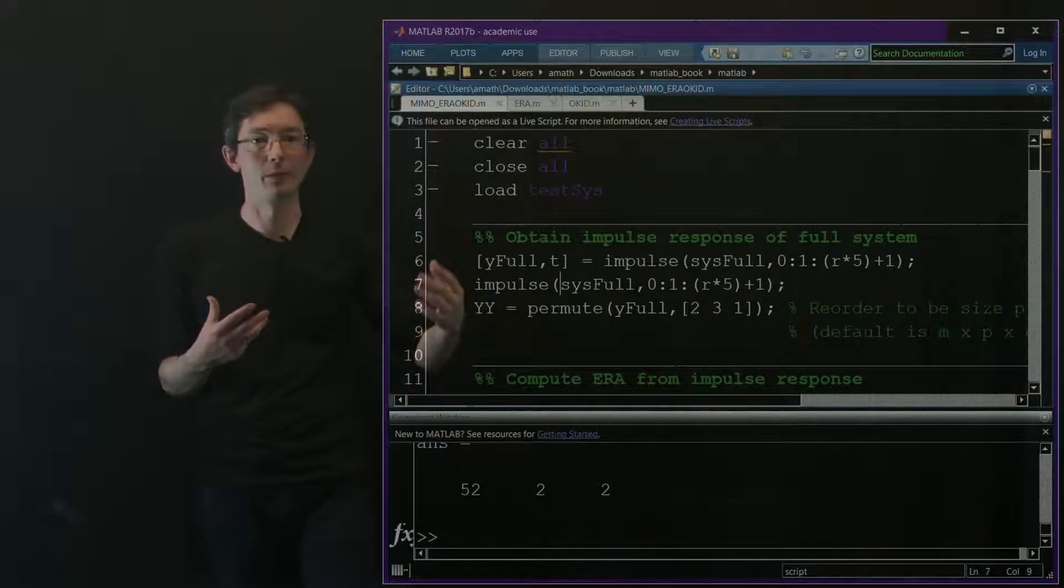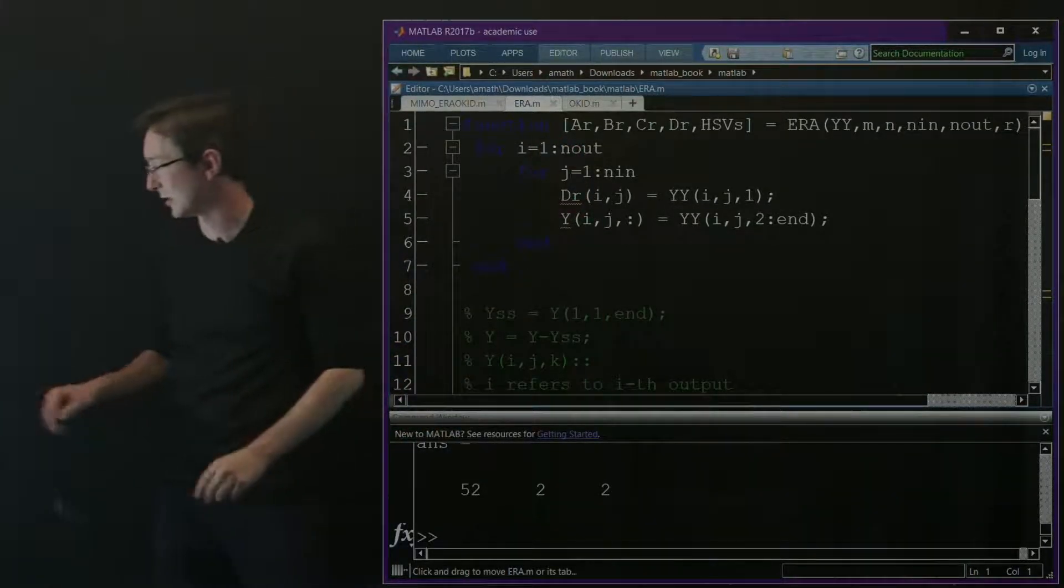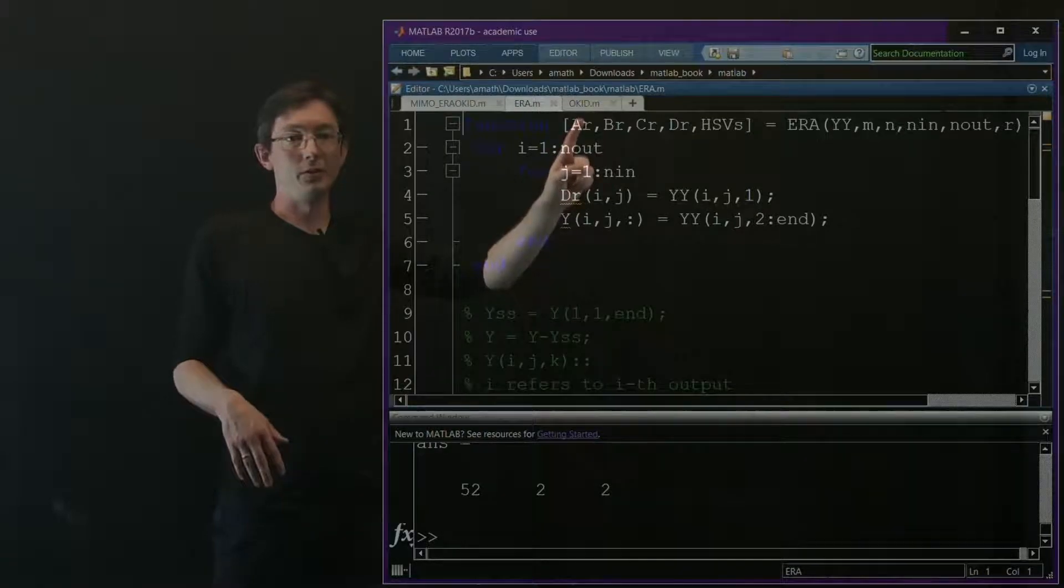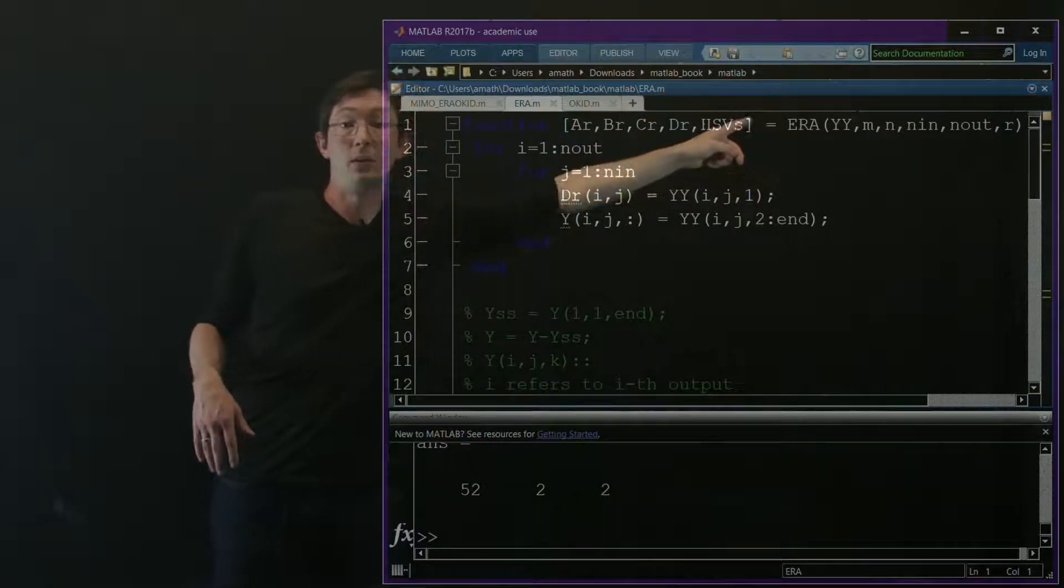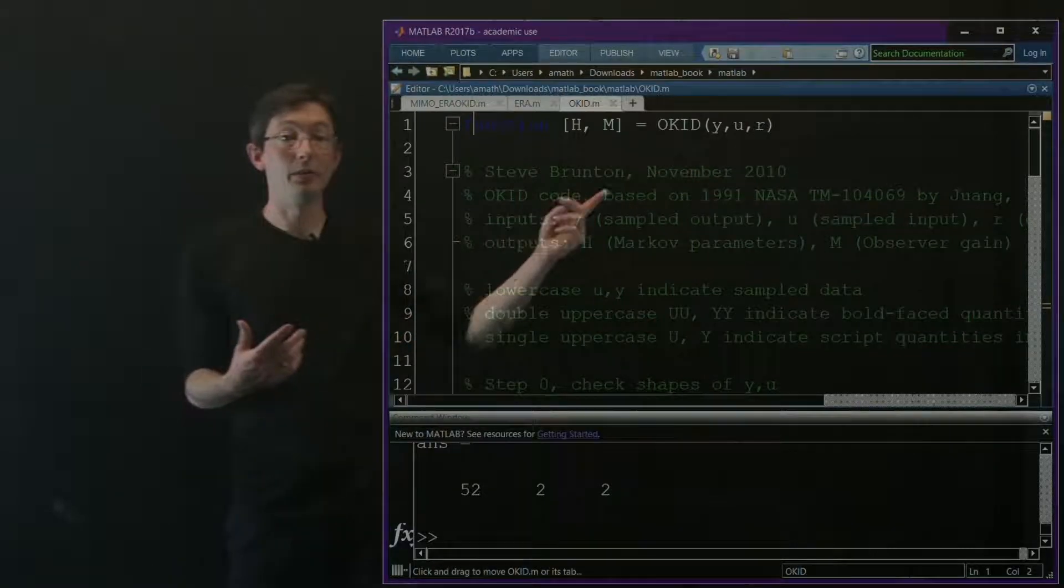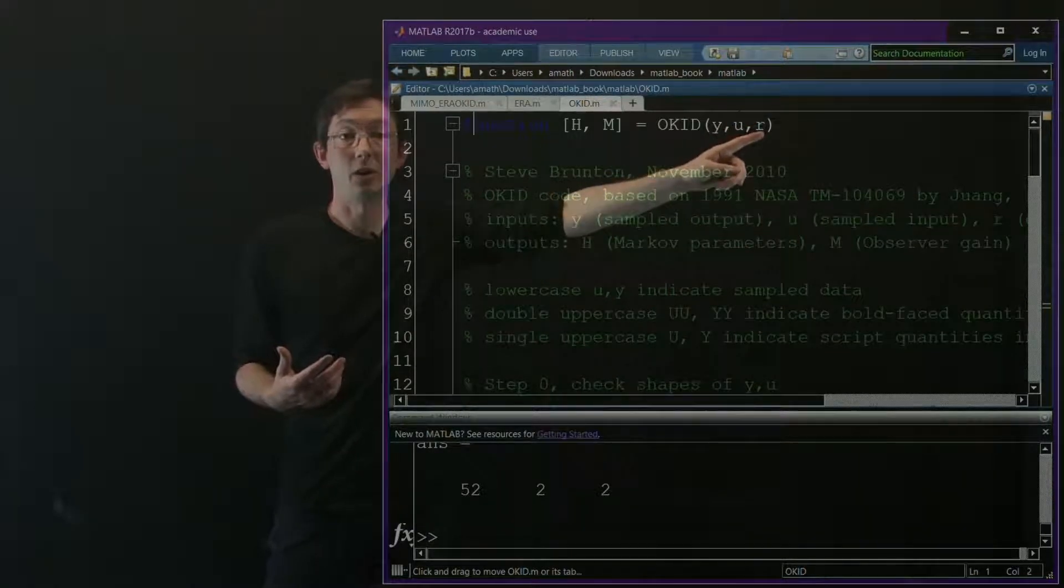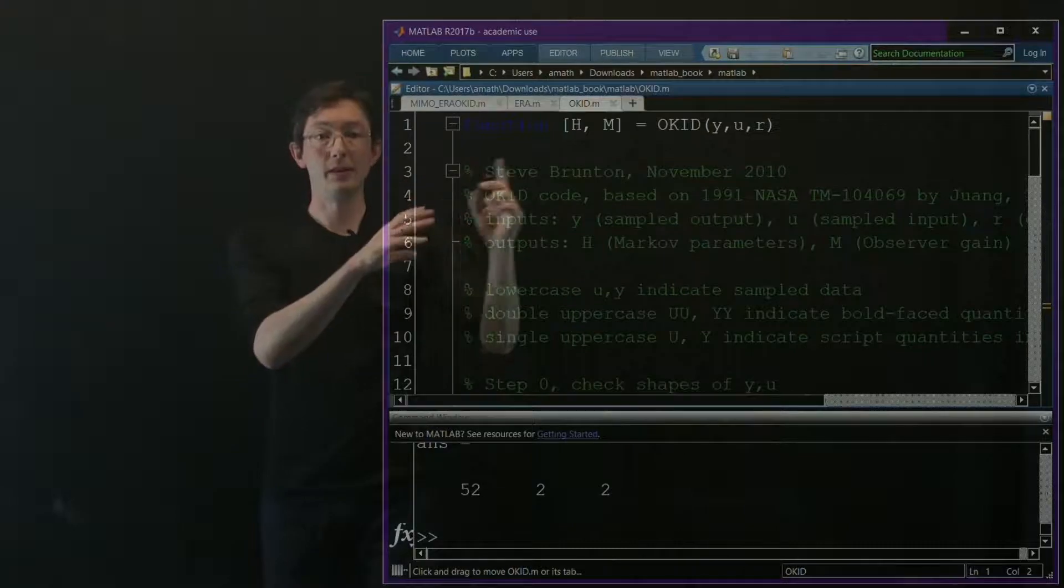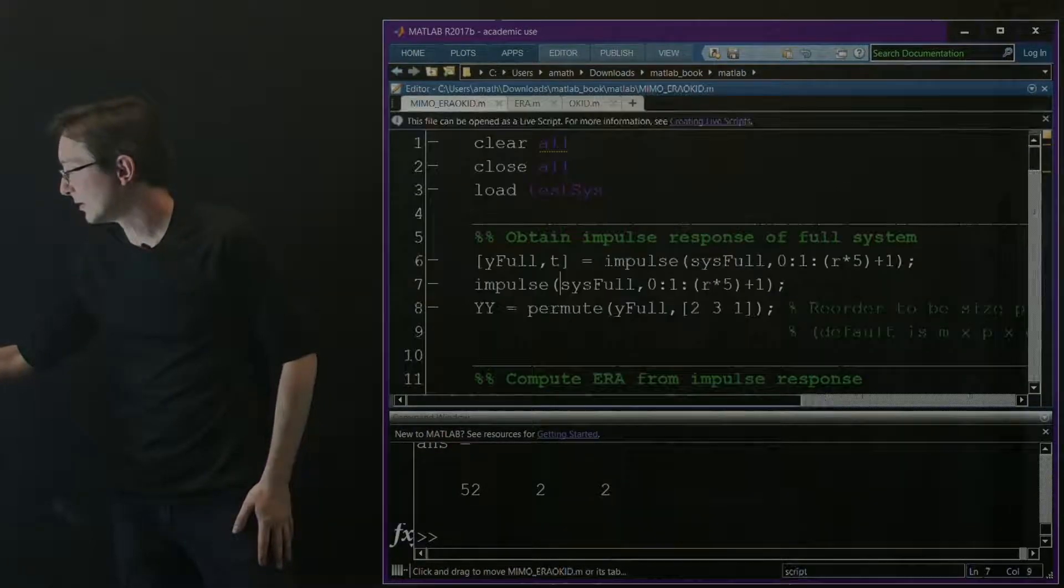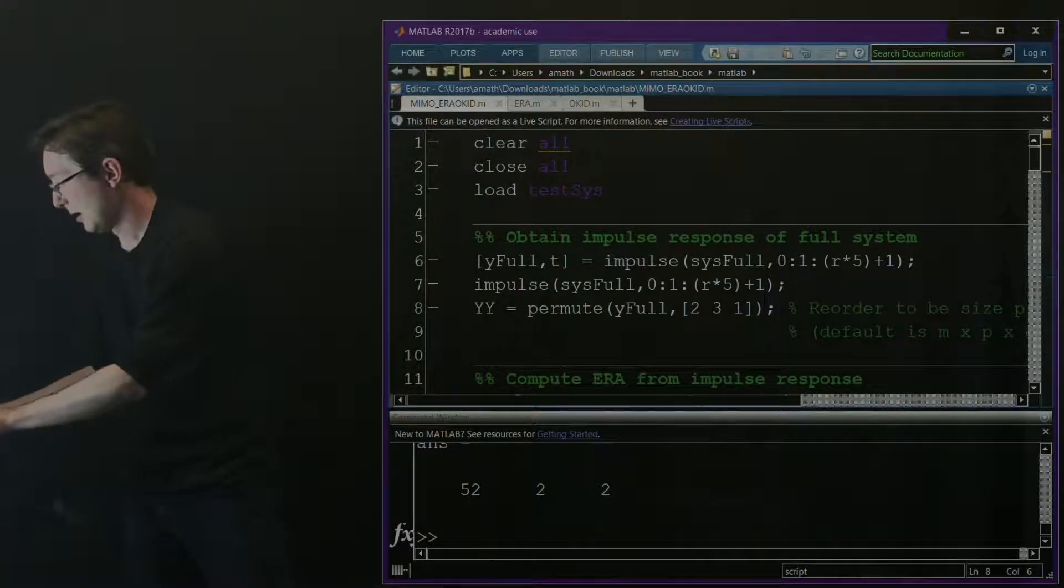I'm putting it into the right matrix format. There's this era.m code you'll have access to - I wrote this based on ERA that computes the reduced A, B, C, and D matrices from your data y at rank r. I also have an OKID code that, given measurements of u and y and some target rank r, will build the impulse response and put it into matrix H that you can then use for ERA. You have access to these codes. We have a system, we're going to collect data from that system.